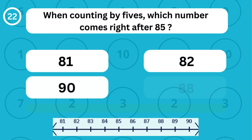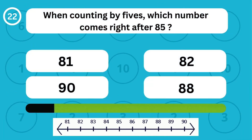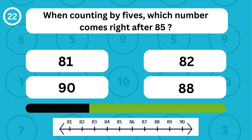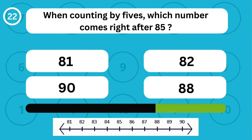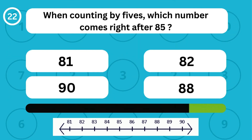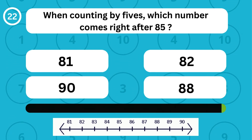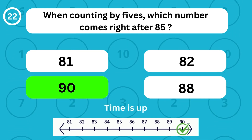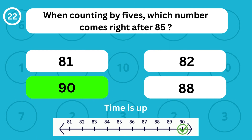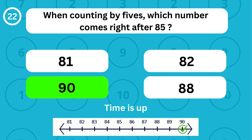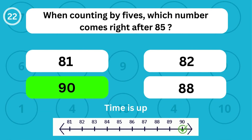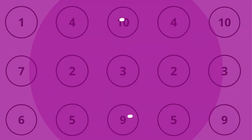When counting by fives, which number comes right after 85? When counting by fives, the number 90 comes right after 85.